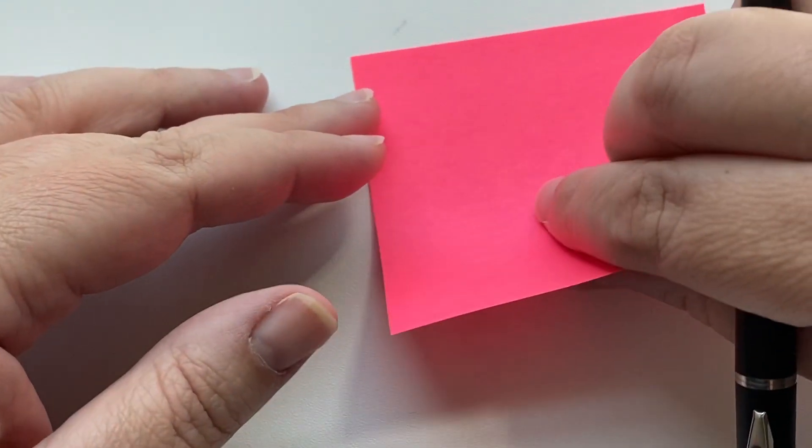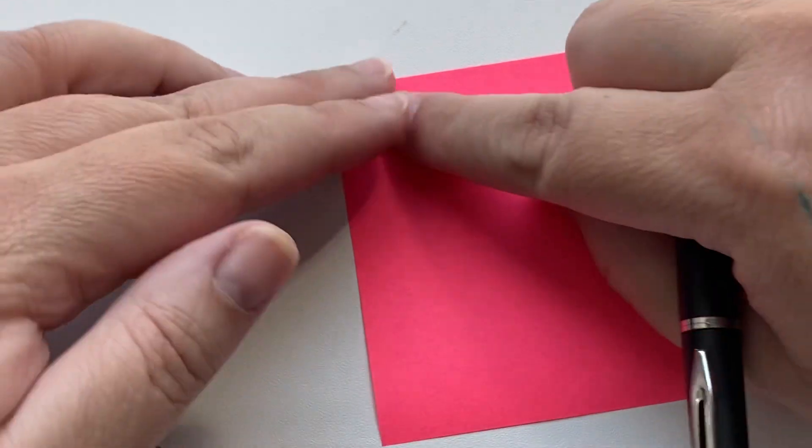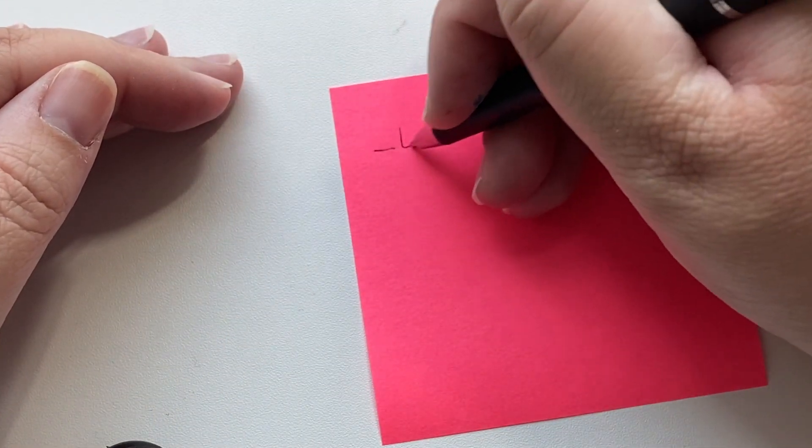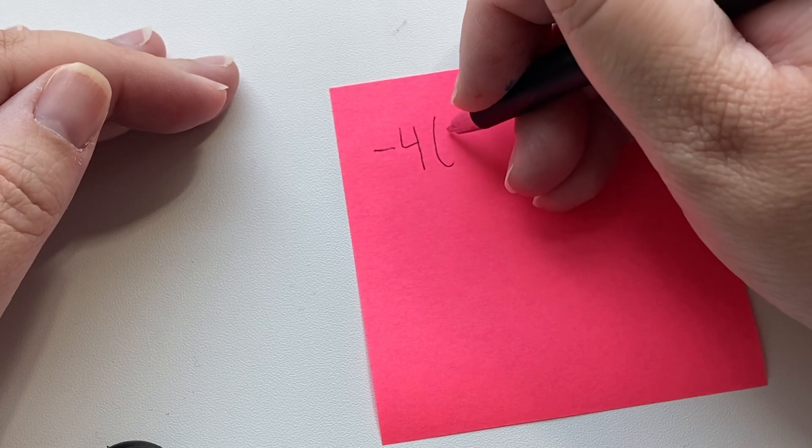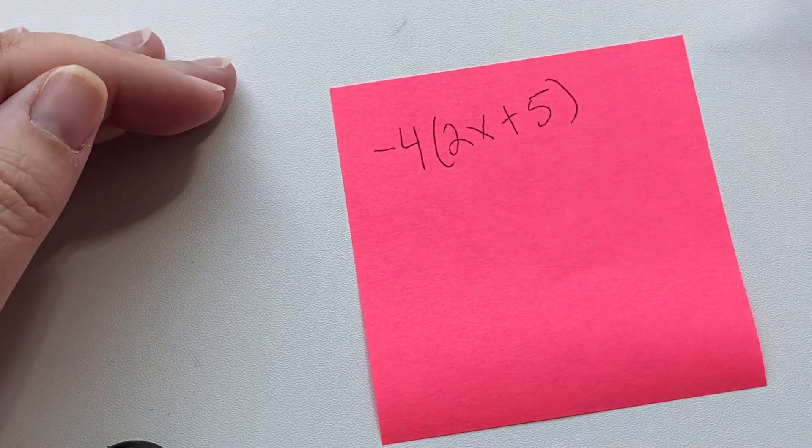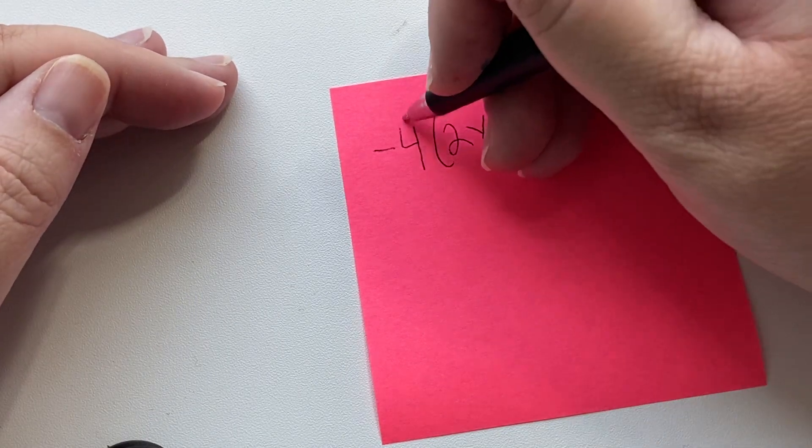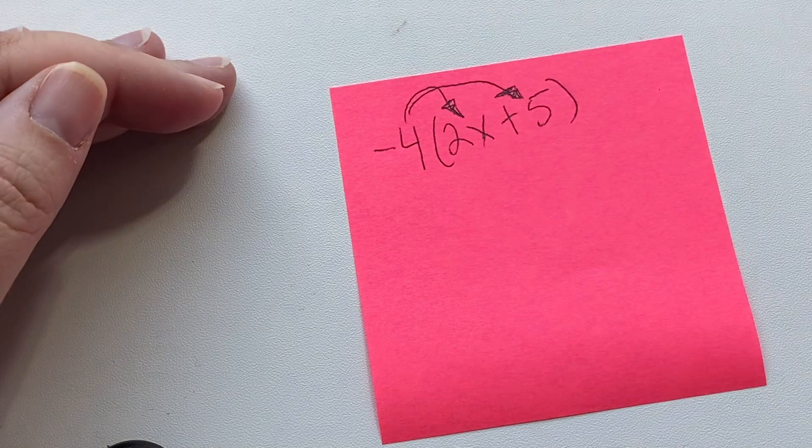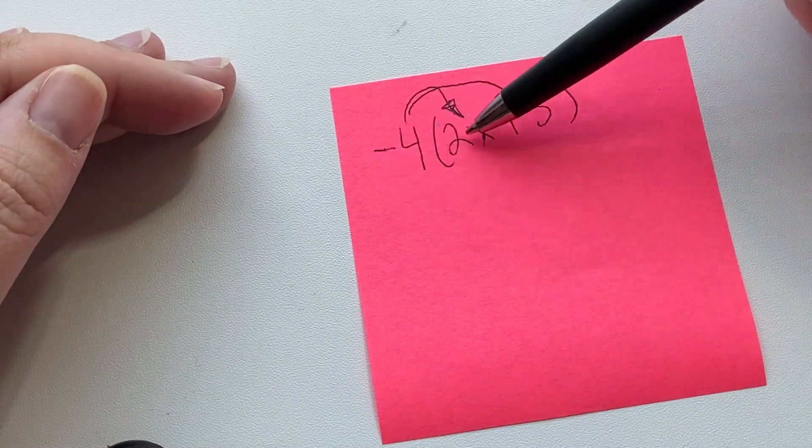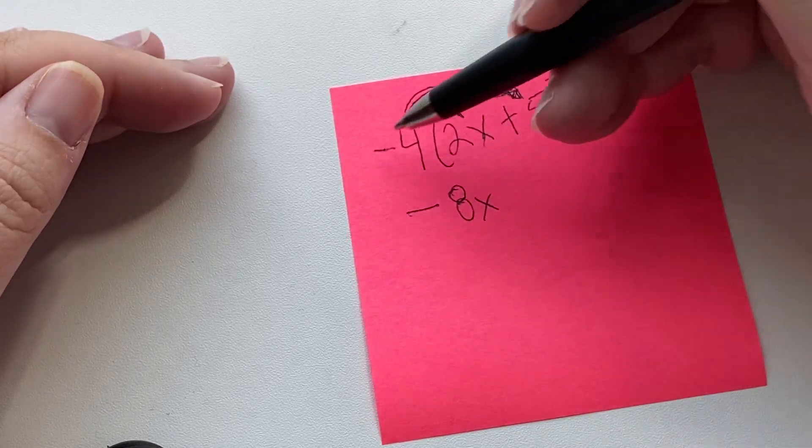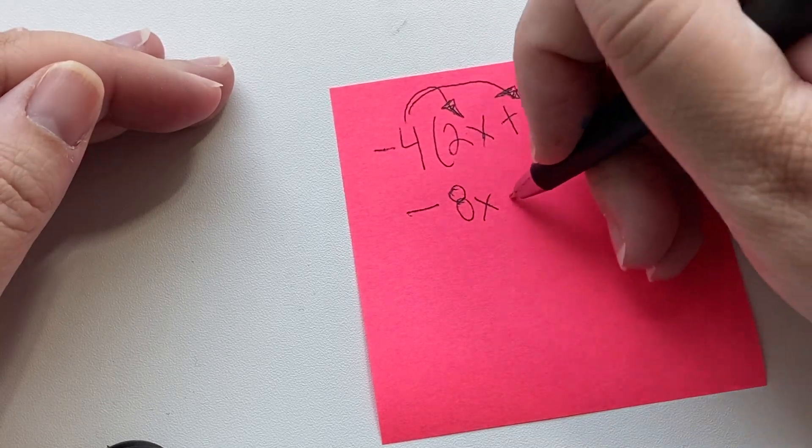Yesterday we talked about how if you have a negative on the outside of the parentheses, you have to distribute that negative to all of the terms on the inside. We also talked about how a negative times a positive equals a negative.